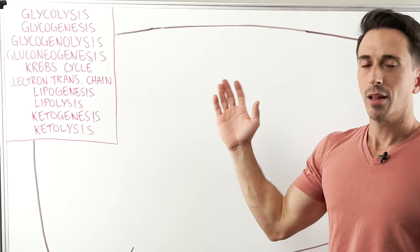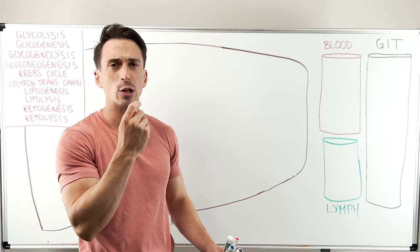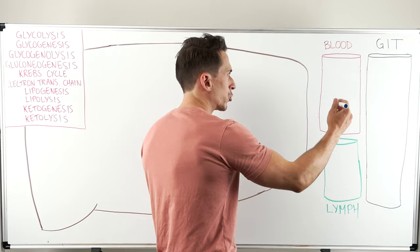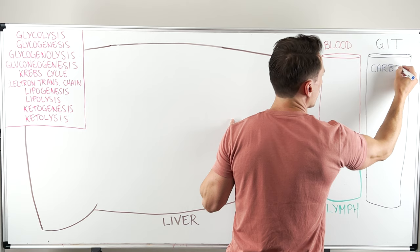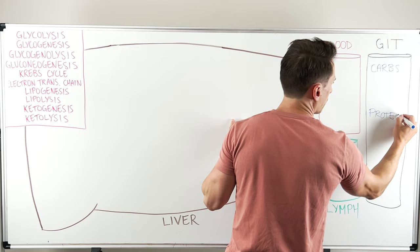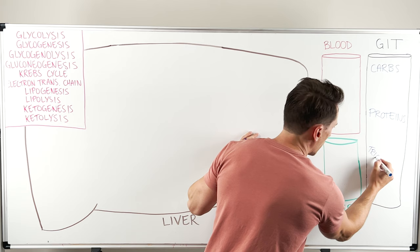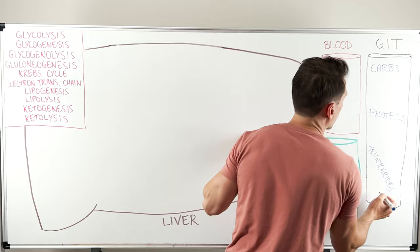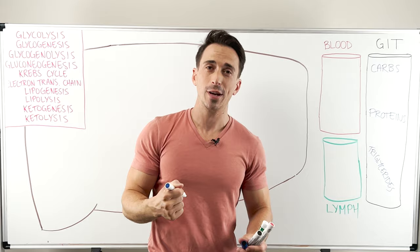Where do we begin? We begin with a delicious cheeseburger. You take that bite and you ingest it. We know that cheeseburgers are gonna contain all those important macronutrients. Those macronutrients include carbohydrates, so carbs. They include proteins, and they include triglycerides, so the fats. So we've got our carbs, our proteins, and our fats that we've now introduced into our gastrointestinal tract.